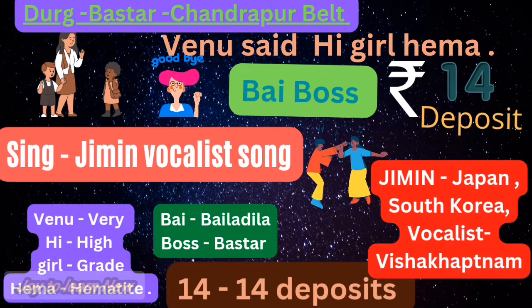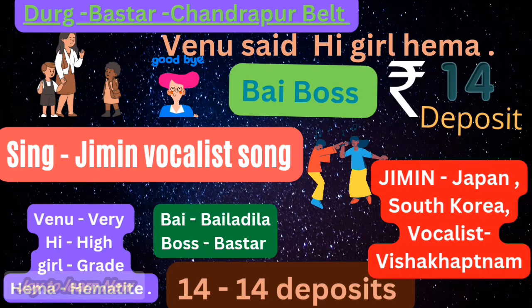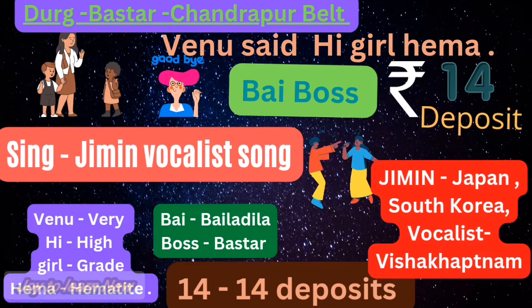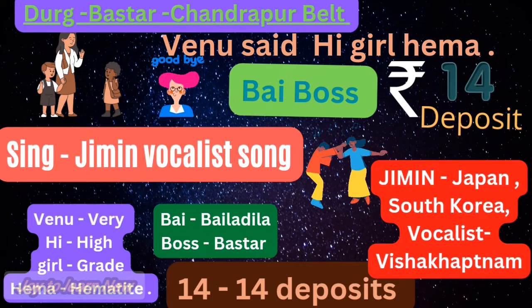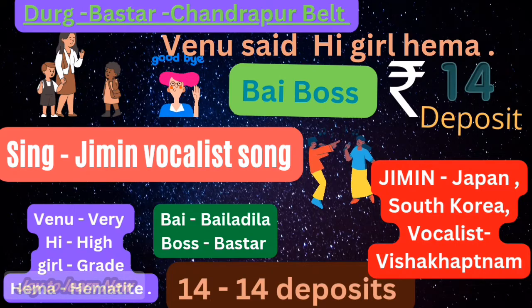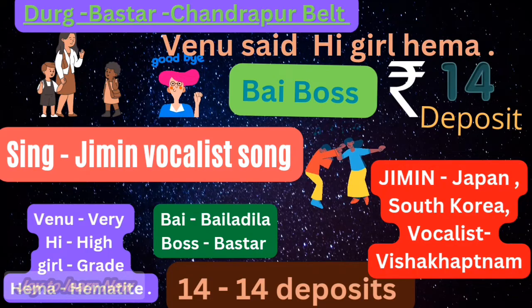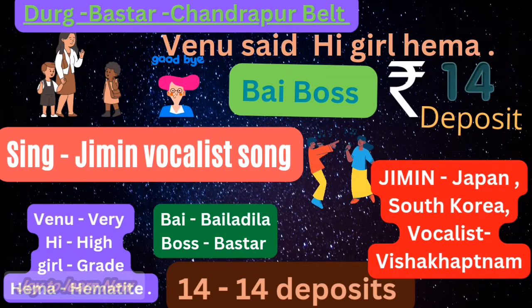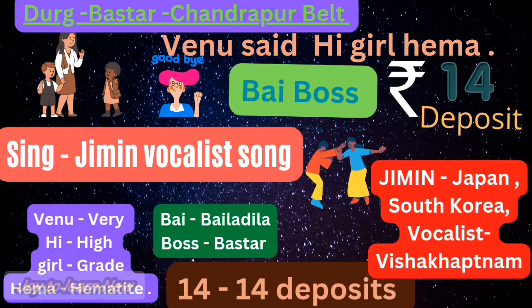Now the explanation: 'Ve' stands for 'very,' 'hi' means high, 'girl' — G stands for great, 'Hema' means hematite — so very high grade hematite is found here. 'Bye boss' — 'Bala' means Bastar district. '14 deposit' means the range of hills comprises 14 deposits. 'Sing' — S stands for South Korea; 'Jimmin' — J stands for Japan; 'vocalist' — V stands for Visakhapatnam. So iron is exported to South Korea, Japan, and Visakhapatnam.